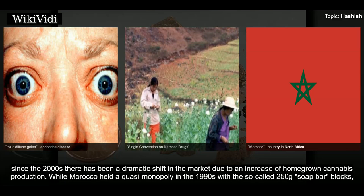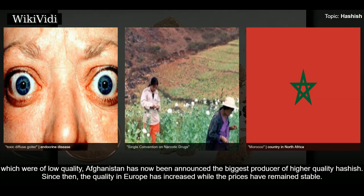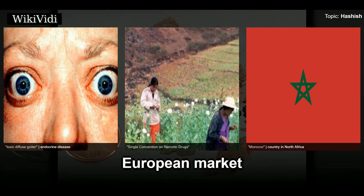It is believed that massive hashish production for international trade originated in Morocco during the 1960s, where the cannabis plant was widely available before the arrival of the first hippies on the hippie hashish trail. However, since the 2000s there has been a dramatic shift in the market due to increased homegrown cannabis production. While Morocco held a quasi-monopoly in the 1990s with low-quality 250-gram soap bar blocks, Afghanistan has now been announced the biggest producer of higher-quality hashish, while prices in Europe have remained stable.